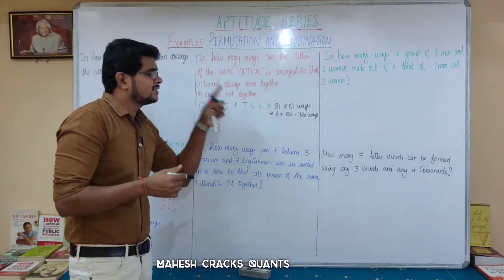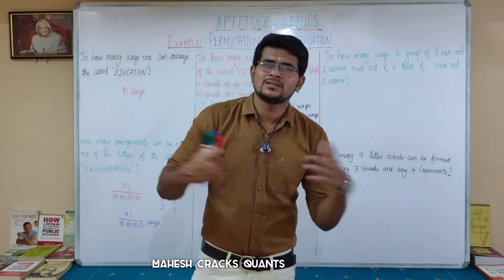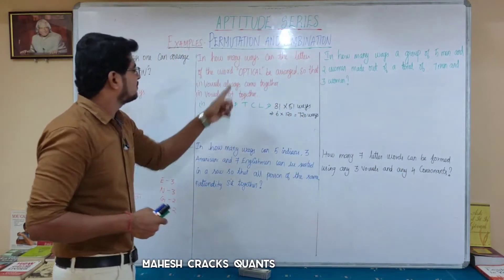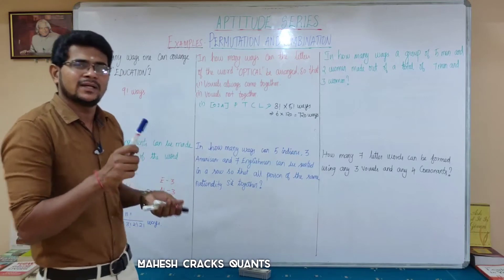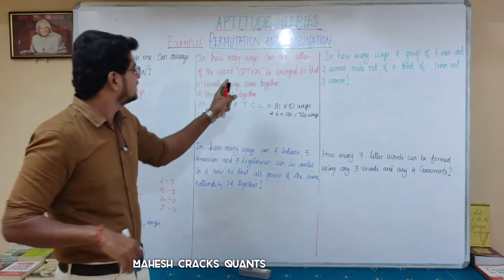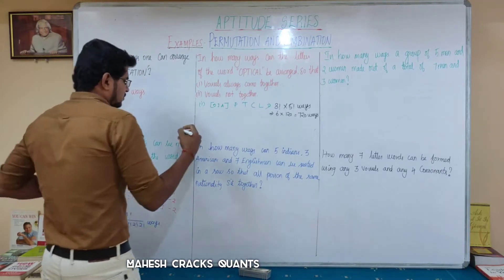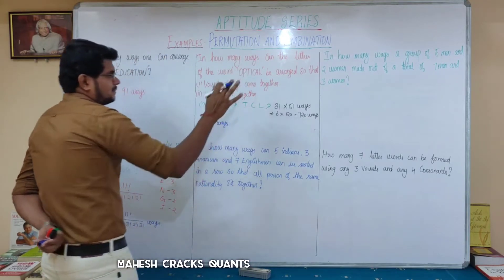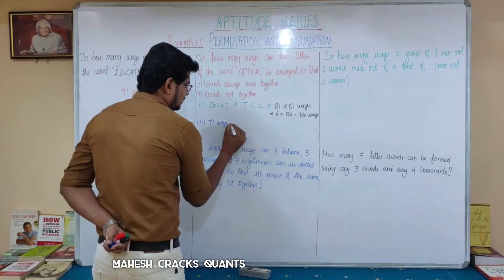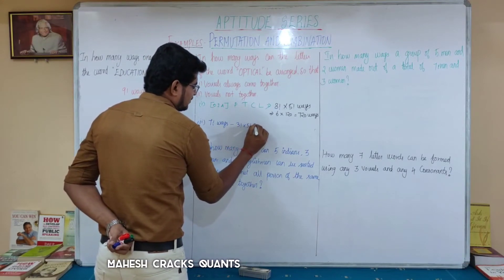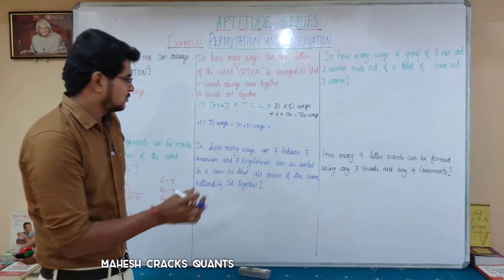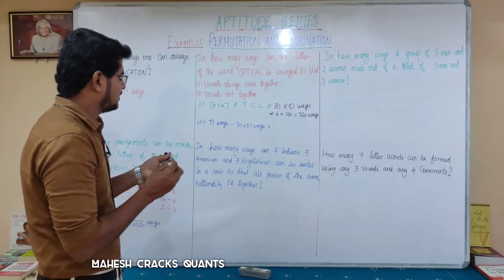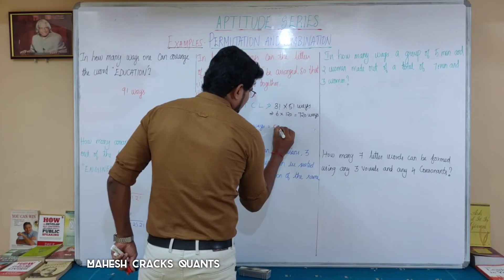Second question: vowels not together. Vowels not together is easy — total number of ways minus vowels together. Total number of ways is 7-factorial = 5,040 ways.